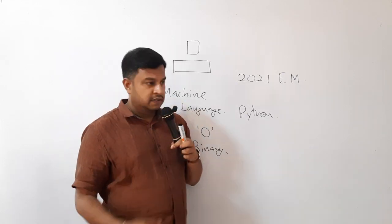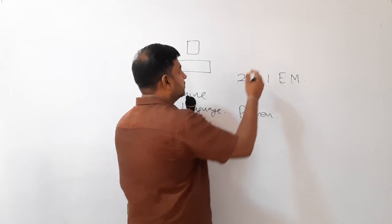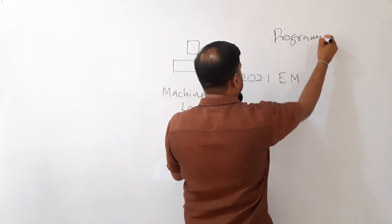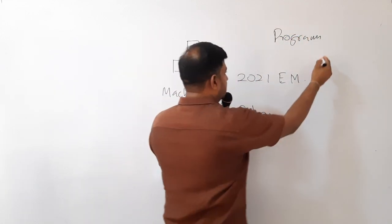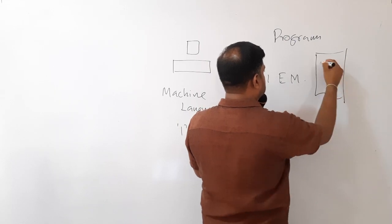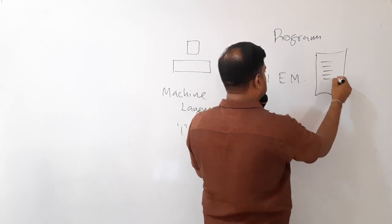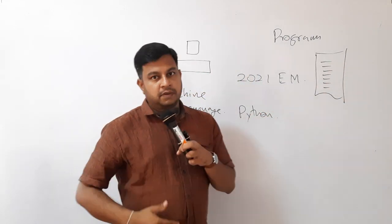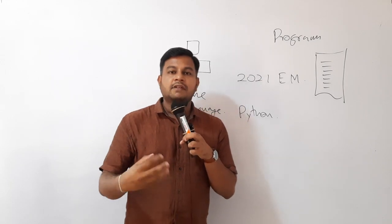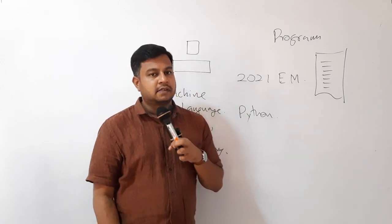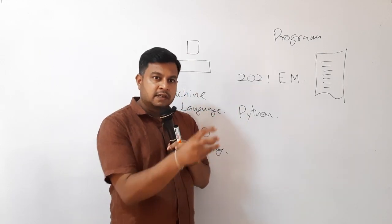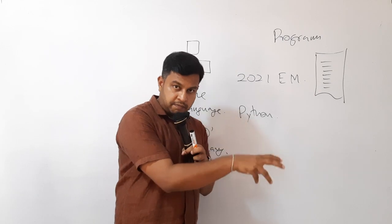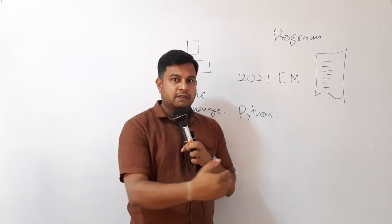So, what is a program? A program is a sequence of instructions — a set of instructions given to a computer to carry out a particular task. You have to give the set of instructions to the computer to carry out a particular task.